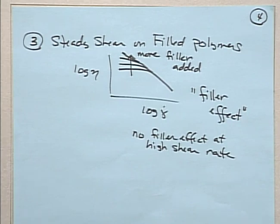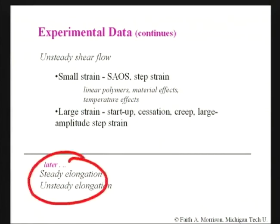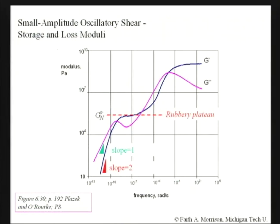Then we moved on to unsteady shear. We're going to talk about small amplitude oscillatory shear, which is a very widely used measurement, and some large strain data. The last thing we'll talk about will be elongational data. Now, this is a classic curve for a long linear polymer, and it's actually a composite curve that's been constructed by the time-temperature superposition principle, which I'll talk about a little bit later.